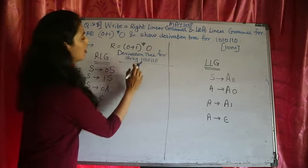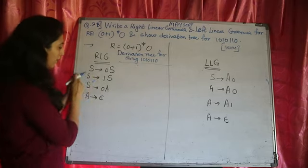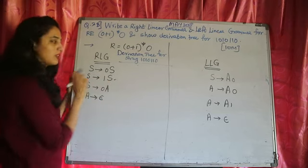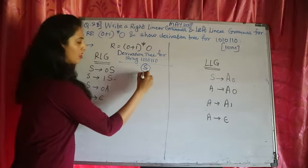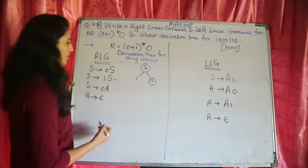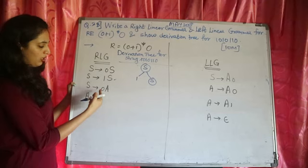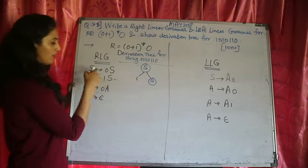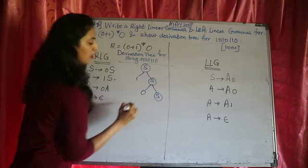Now let us start with the derivation tree. The first symbol in the string is 1, so we focus on the production rule which gives us the first symbol as 1. We start with the start state S and use the production S → 1S. Next, after 1 I want 0, but I need to continue, so I will use S → 0S for the repeating loop.